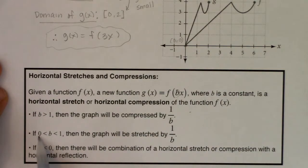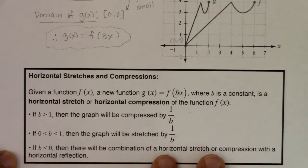If b is between zero and one, then the graph will be stretched by 1/b, and we're going to talk about this a little bit later on. If b is less than zero, then there's going to be a combination of a horizontal stretch or compression in combination with a horizontal reflection. But we'll talk about reflections in a little bit later. Actually, we're going to talk about it in the next example, so we'll be touching on this idea as well.